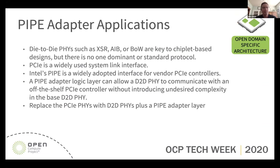So why pipe? D-to-D PHY — XSR, AIB, and BOW — these are chiplet-based designs, but there are several different PHYs and no one PHY dominates. Meanwhile, PCIe is a widely used protocol, and Intel's pipe — PHY interface for PCI Express — is probably the most widely used PCI controller interface. So with a proper pipe adapter logic layer, we can allow D-to-D PHYs to communicate with off-the-shelf controllers, hopefully without introducing too much PCIe-style complexity in the D-to-D PHY.